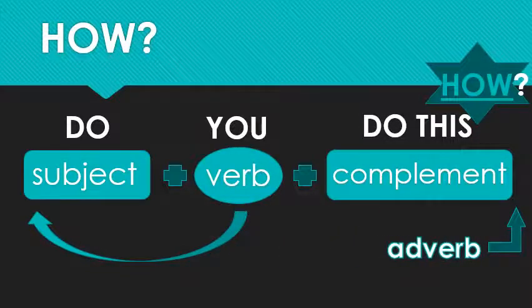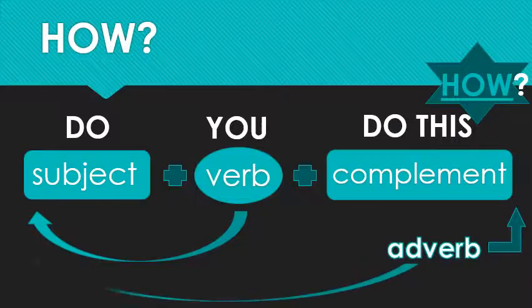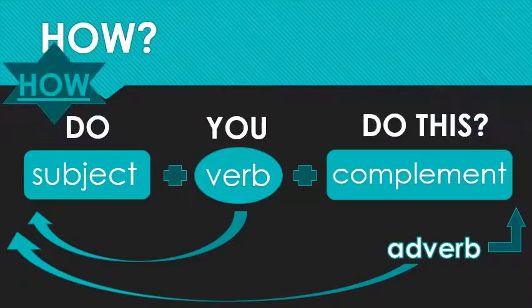We want to introduce 'how' into this sentence, so it's not a yes/no question anymore. 'Do you do this? Yes, I do. No, I don't.' How will give me more options on how to respond. Traditionally, with just my question adverb, it goes in front of the do. So my question is: 'How do you do this?'